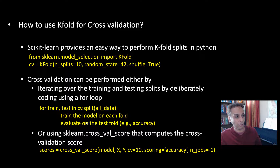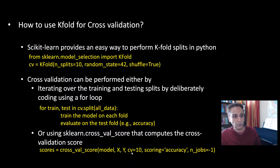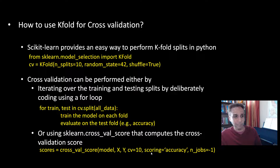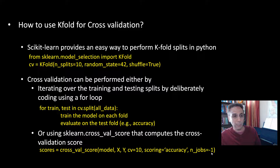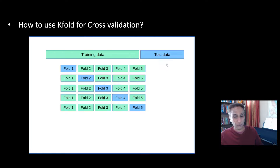To use cross_val_score, you supply your model (SVM, random forest, or even a neural network later), your X and y data, cv equals the number of folds (e.g., 10), and a scoring metric such as accuracy. You can also specify n_jobs for parallel processing, though be careful with certain models. This is how you implement K-fold cross-validation in Python in a concise way.